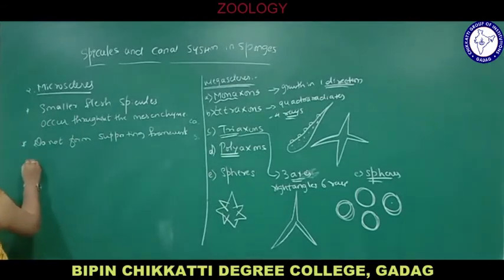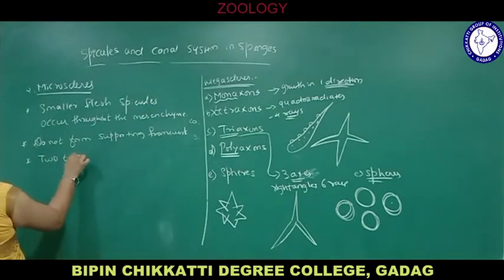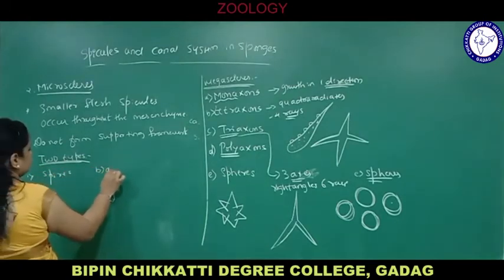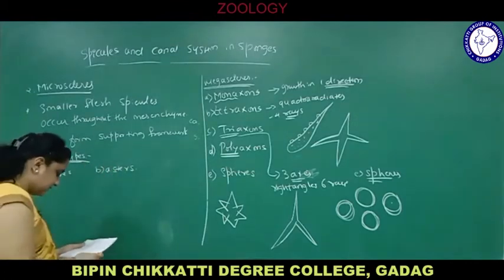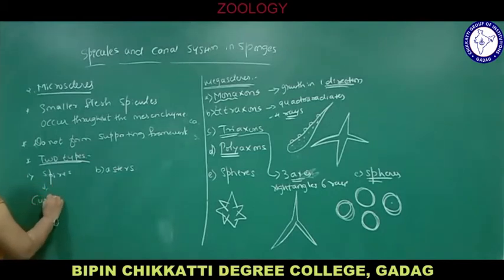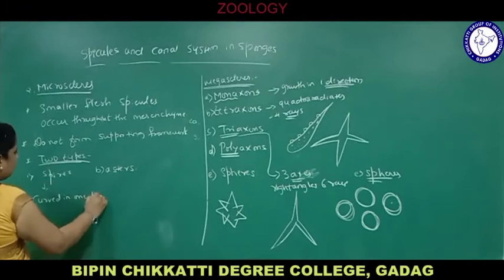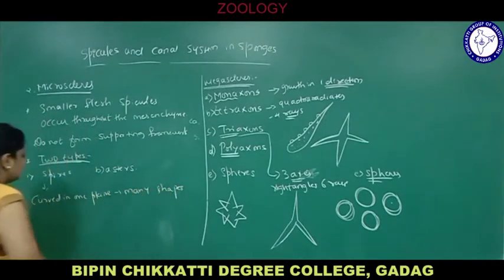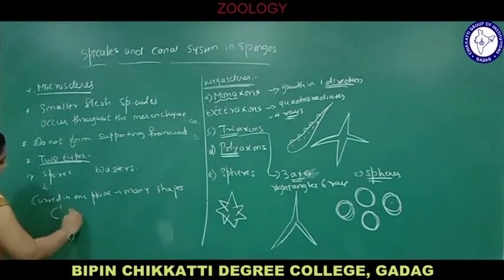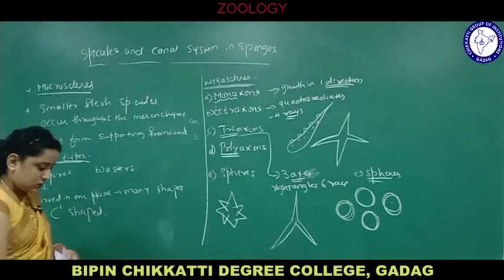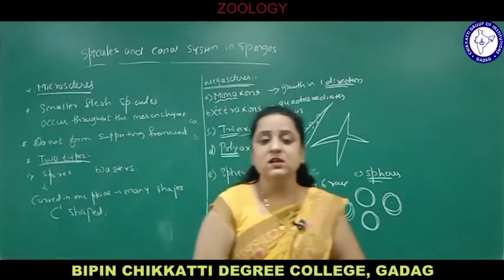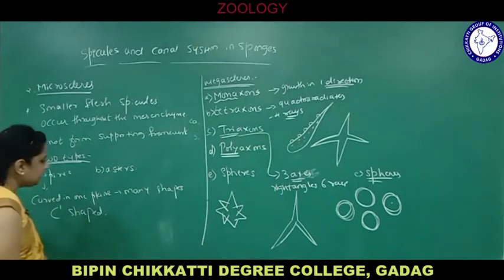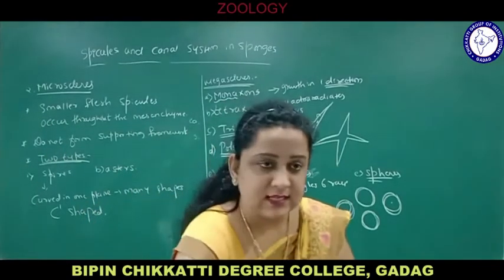Microscleres are of two types: spires and asters. Spires are curved in one plane and exhibit many shapes; the most common shape is C-shaped. Asters include spicules with small centers and long rays, and there are different types such as oxyasters, spireasters, and tileasters.